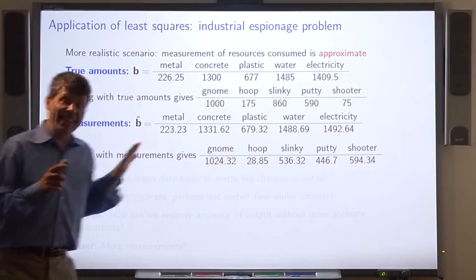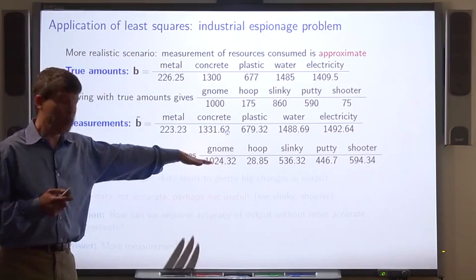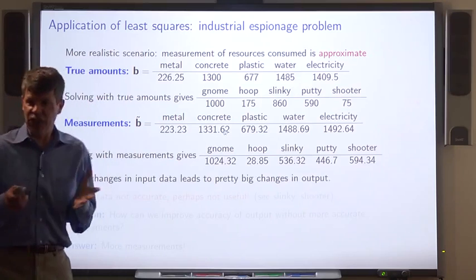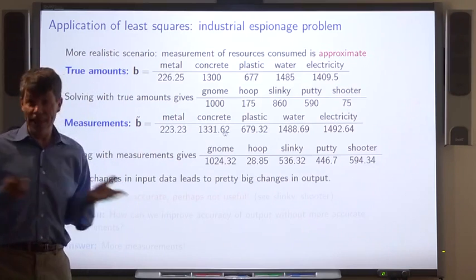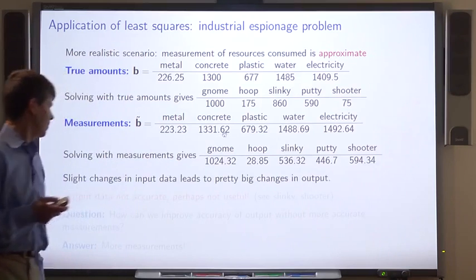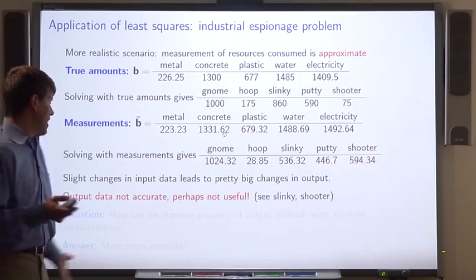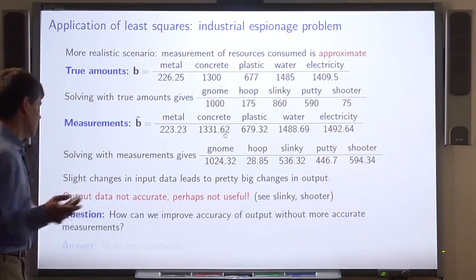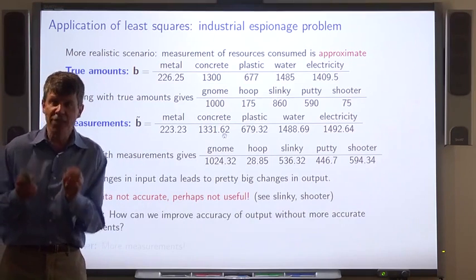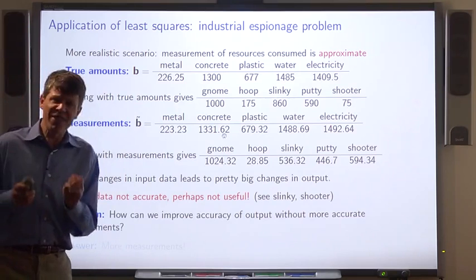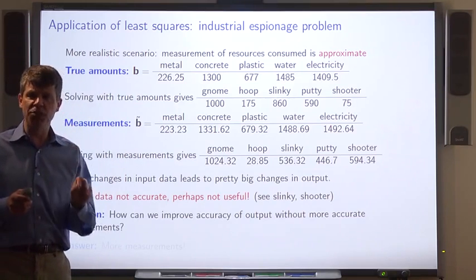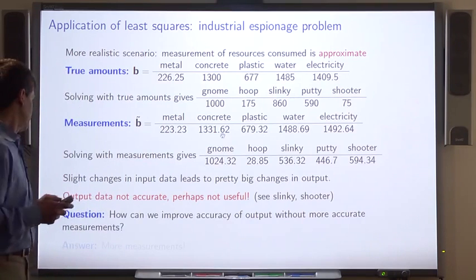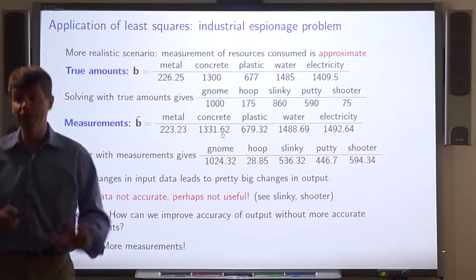So it seems like we can't get accurate outputs when we have only approximate inputs. Slight changes in the input data lead to big changes in the output. So the output data is not accurate and possibly useless to us. So how can we improve the accuracy of the output without getting more accurate measurements of the resources, without having more accurate inputs? And the answer is we take more measurements.